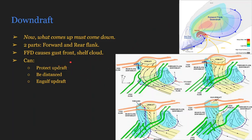Again, just talked about the FFD, your gust front and shelf cloud. The RFD specifically can protect the updraft, be further distanced than what is shown in this third image here, or can engulf, choke, and therefore kill off the updraft.